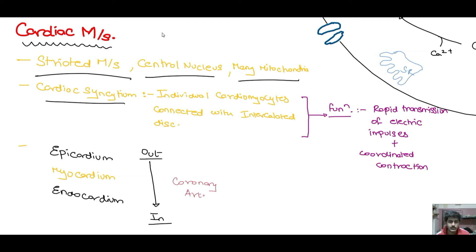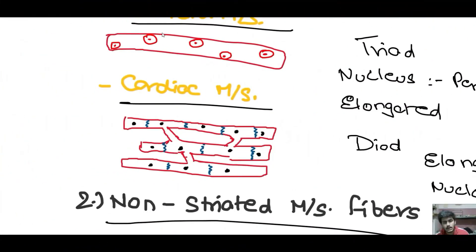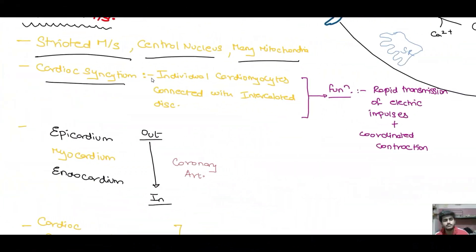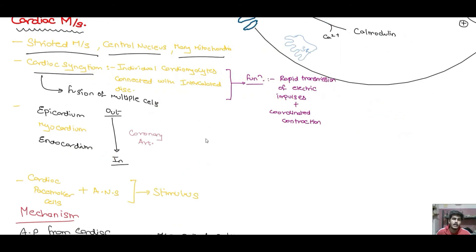The individual cardiomyocytes are connected with the help of intercalated discs, as shown in the diagram — these are the IC discs. The syncytium works like a multi-nucleated cell, formed by the fusion of multiple cells joined with the help of intercalated discs. The function of the syncytium is to provide rapid transmission of the electrical impulse or action potential to the muscle cells, which helps in coordinated contraction.